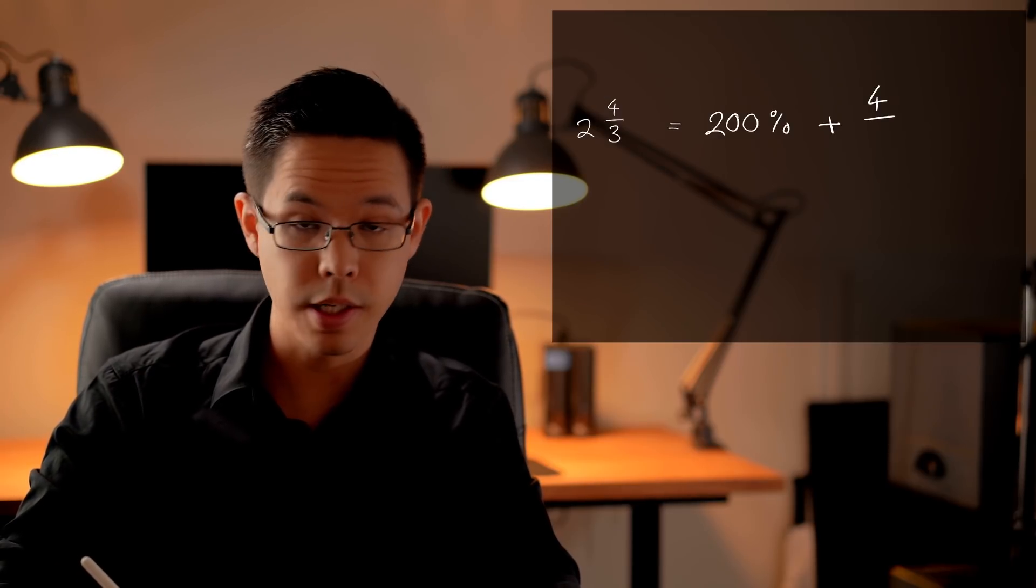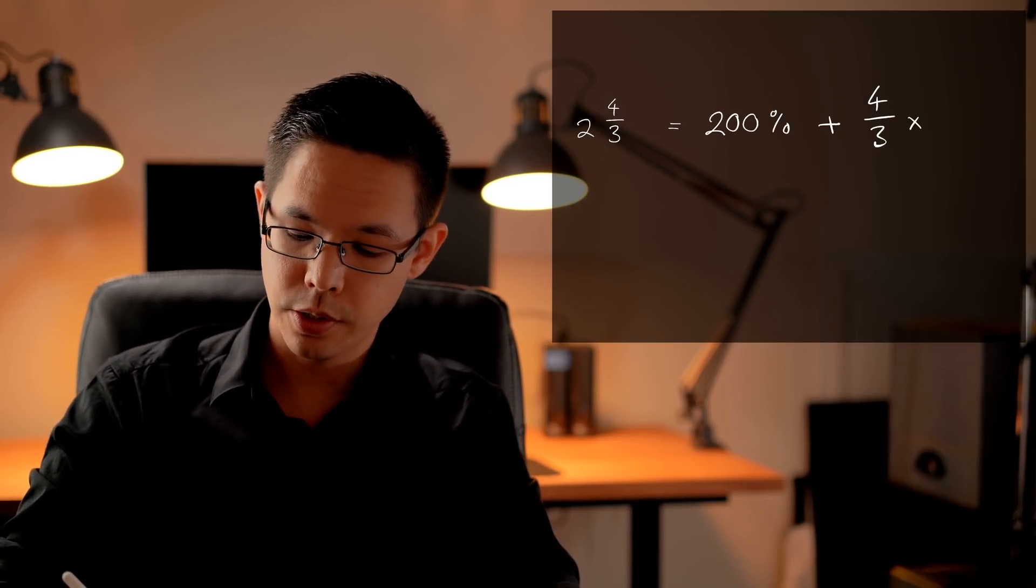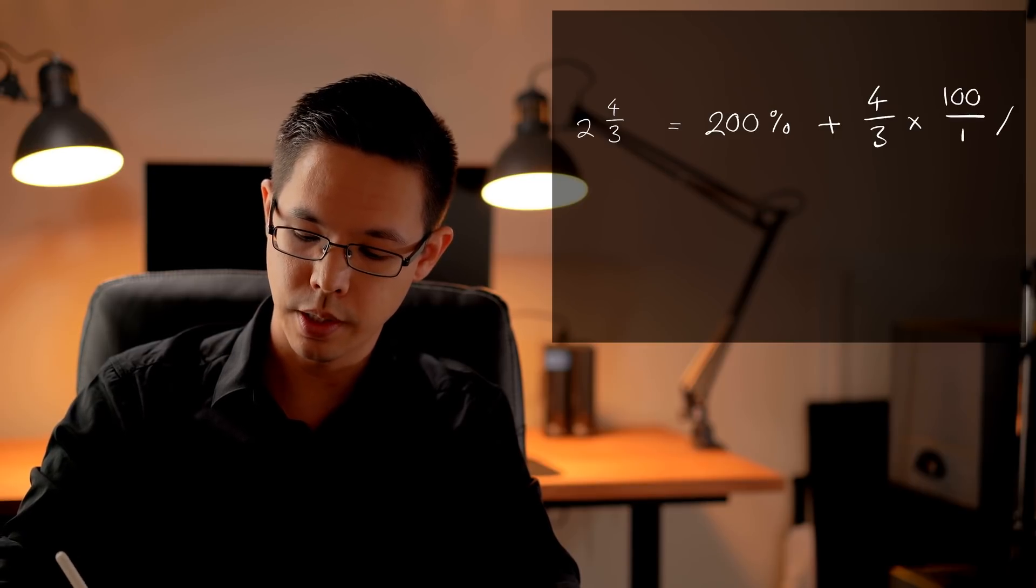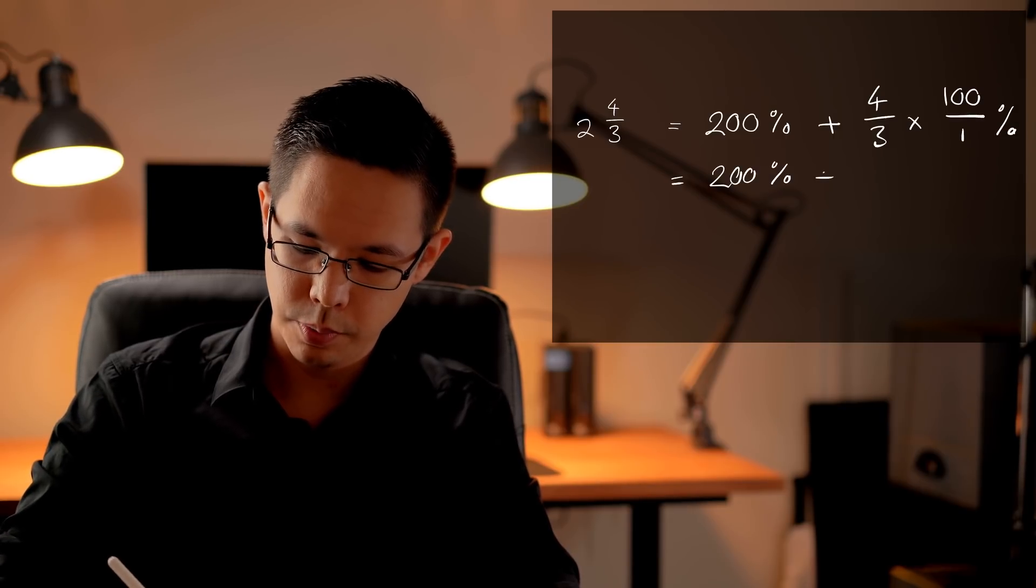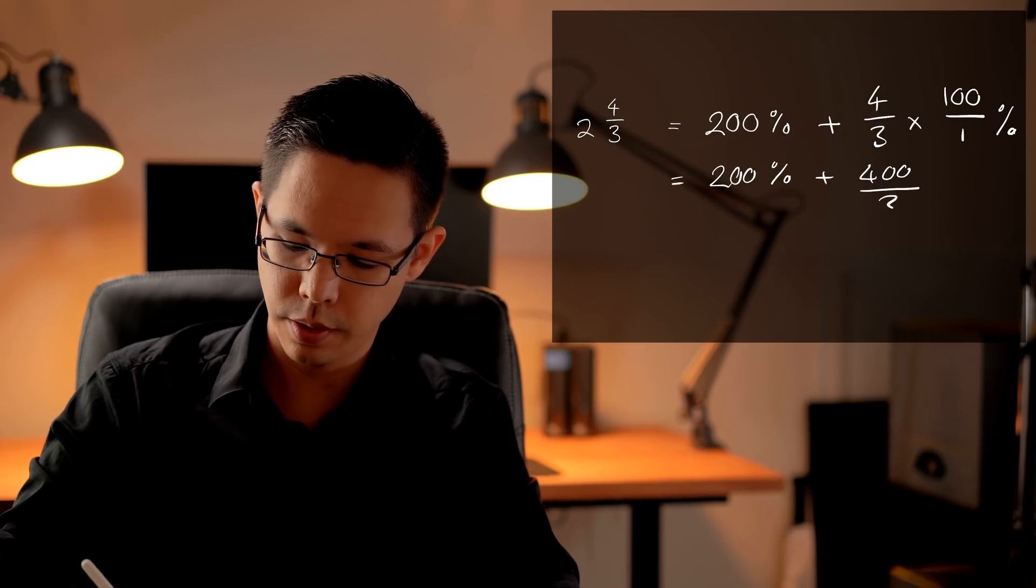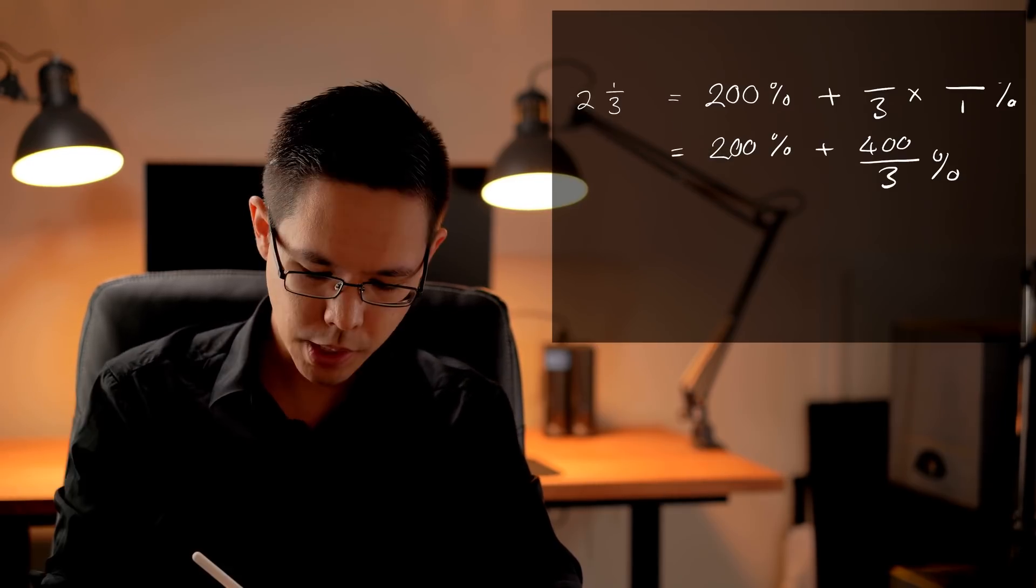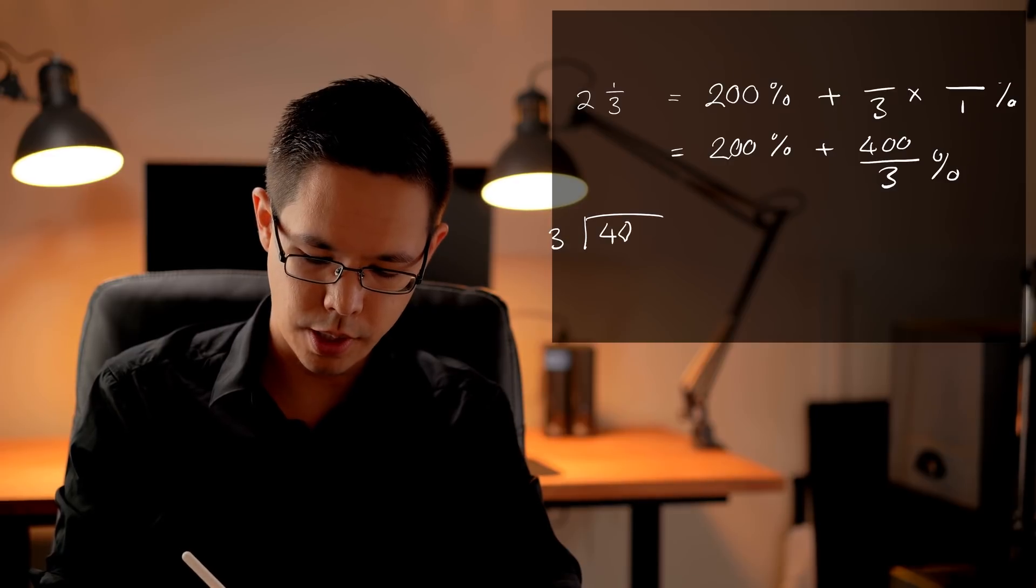Let's look at another example here. I've got 2 and 4 thirds. I've deliberately made it so that I can't use the equivalent fraction method. Here what I can do again treat the number 2. I can treat that as 200% because it's two wholes. 200% plus my 4 thirds and for my 4 thirds because it doesn't have a denominator that can be converted I'm going to do the 100 over 1 trick. 200% plus 400 over 3 and I'm going to do short division.